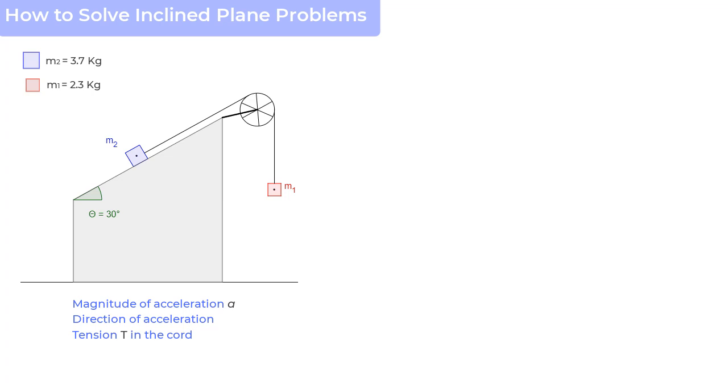So step 1 here would be to make a free body diagram. And let us start with m1 and see it in isolation as if that is the only item in the entire system.